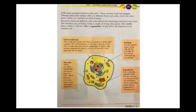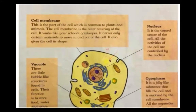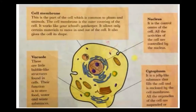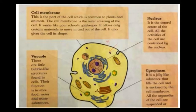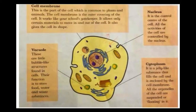The nucleus, as you can see here, is the control center of the cell. All the activities of the cell are controlled by the nucleus. The cytoplasm is a jelly-like structure that fills the cell and is enclosed by the cell membrane. All the organelles of the cell are suspended or floating in the cytoplasm.